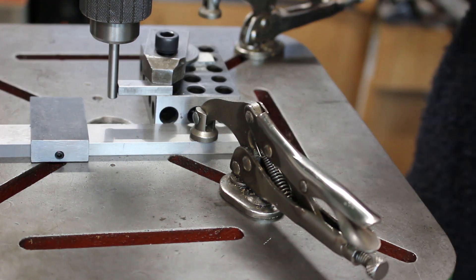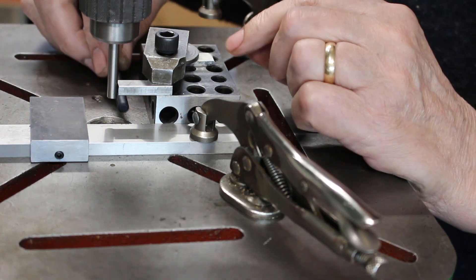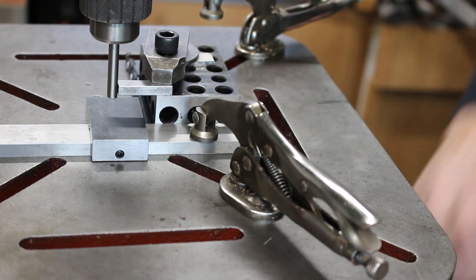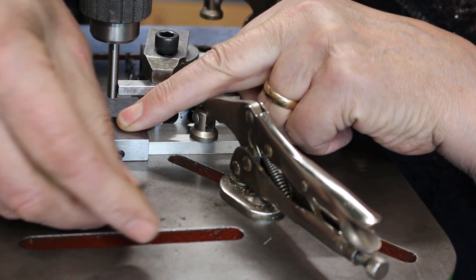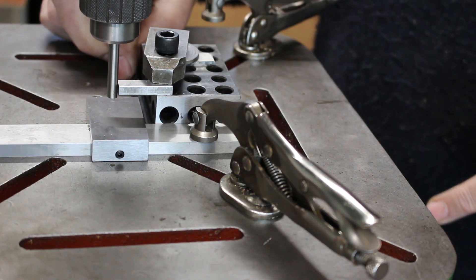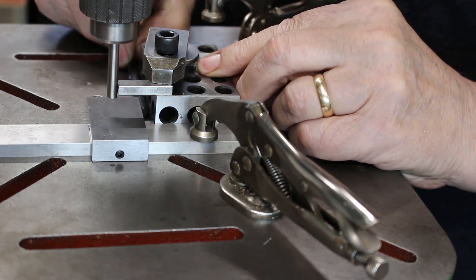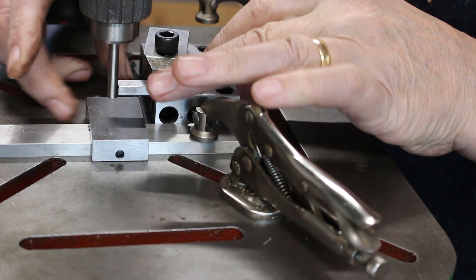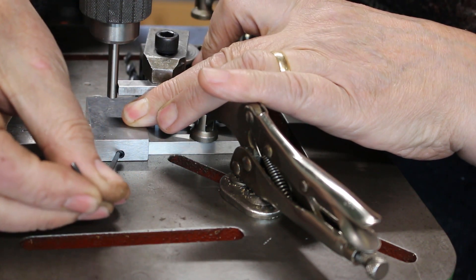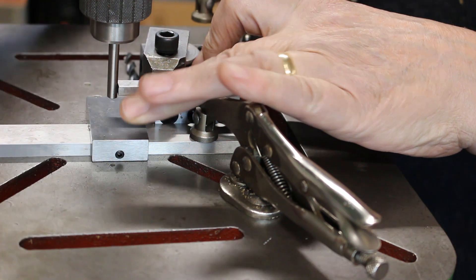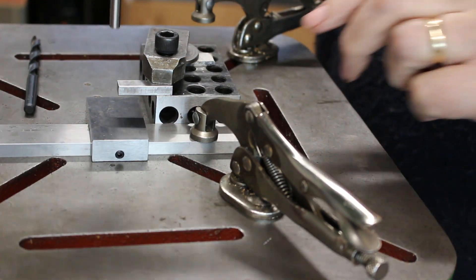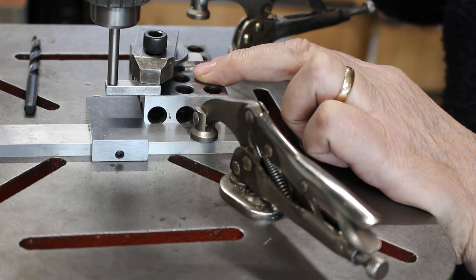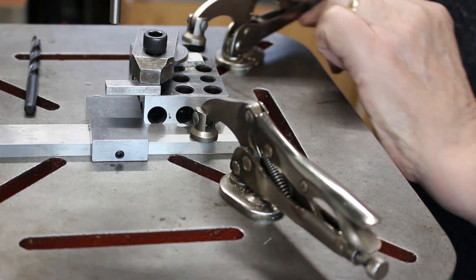I'll do the same with the other side, with the other axis. I'll use the drill again, seven millimeters, bring the block down, drop it in position. Just check everything's okay. Remove the drill, lift the spindle. That's the position for our first hole. Clamp that down for security.